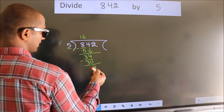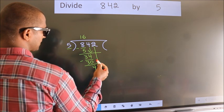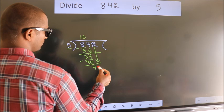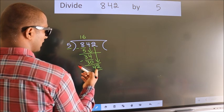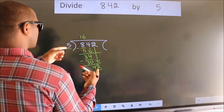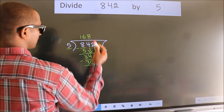After this, bring down the beside number, so 2 down. So 42. A number close to 42 in the 5 table is 5 times 8, which is 40.